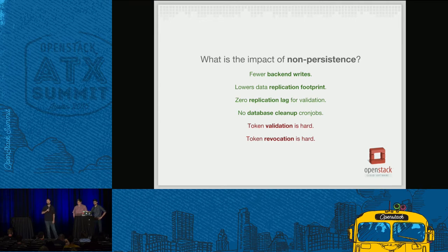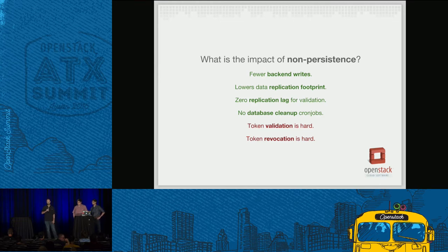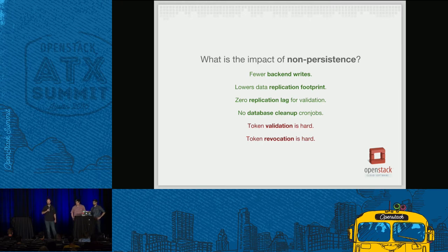Token revocation is also hard. With UUID tokens, we can just delete them from the database and the token's revoked. With PKI that was a little more of a challenge but essentially the same process — mark it as deleted, your entire cluster gets made aware, and you're done. With Fernet, we had a long process of implementing token revocation events. It's a more interesting problem than we've ever had before.